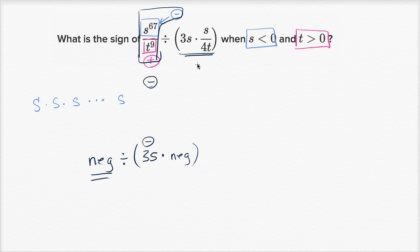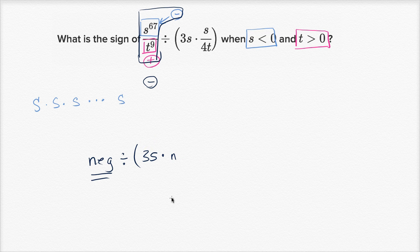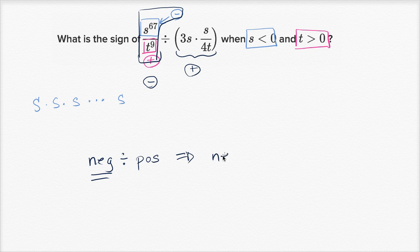All of that denominator business — 3s times s over 4t — is going to be positive. Another way to think about it: negative times negative is positive, divided by positive is just positive. So we have a negative divided by a positive, which is going to be negative. The sign of this expression is negative when s is less than zero and t is greater than zero.